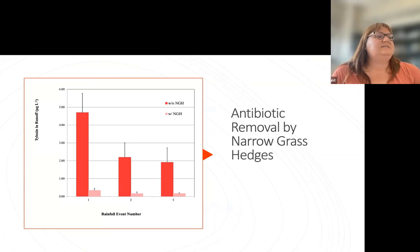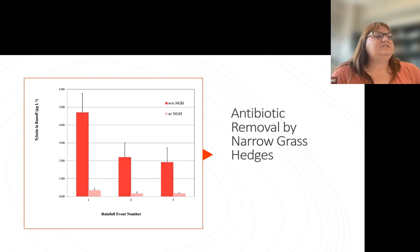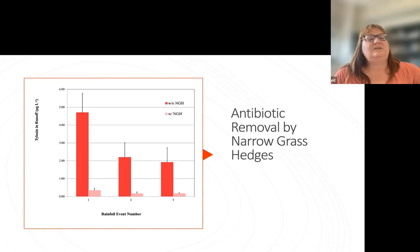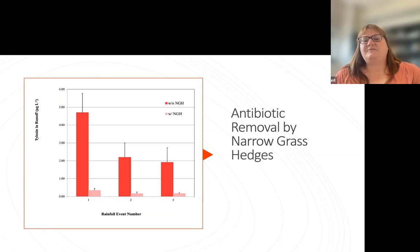Here's data for tylosin in runoff, where swine manure was placed on one side of the grass hedge, rainfall experiments were conducted, and runoff was collected after passing through the grass hedge. The dark red bars correspond to concentrations without any grass hedge, whereas the light pink bars show the reduced concentration observed with the grass hedge. We do see removal in these edge of field approaches for mitigating antibiotic movement from land-applied manure.